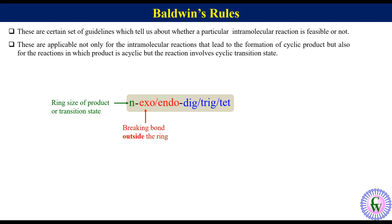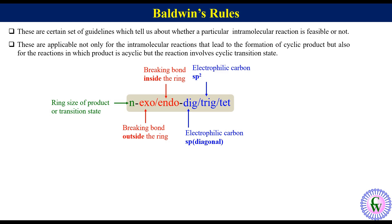Exo indicates the bond being broken is outside the ring, and endo indicates the bond being broken is inside the ring. Dig means the electrophilic carbon is sp-hybridized, that is diagonal geometry. Trig means the electrophilic carbon has sp2 hybridization, that is trigonal geometry. And tet means the electrophilic carbon has sp3 hybridization, that is tetrahedral geometry.